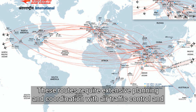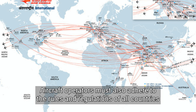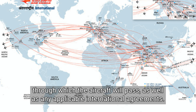These routes require extensive planning and coordination with air traffic control and other ground service providers to ensure safety and efficiency. Aircraft operators must also adhere to the rules and regulations of all countries through which the aircraft will pass, as well as any applicable international agreements.